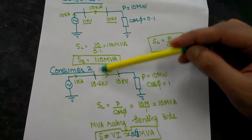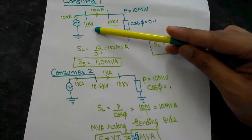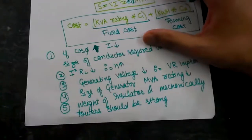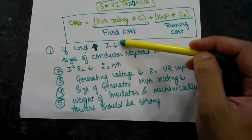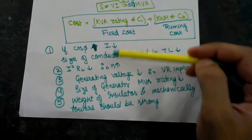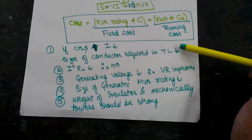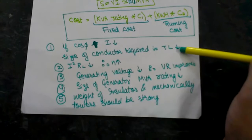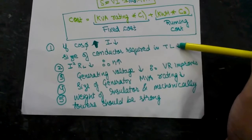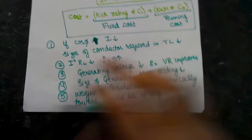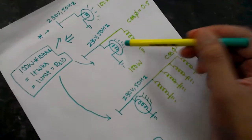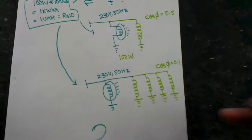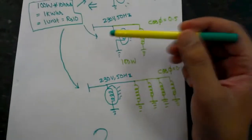The voltage drop also increased from 0.6 kV to 1 kV. So what has basically happened: as power factor improves, the amount of current decreases. If the amount of current decreases, the size of conductor required in the transmission line also decreases, because to carry a large amount of current you need a thicker conductor. That is the extra facility or privilege being provided to customers with poor power factor — they must be drawing a higher amount of current from the power utility.